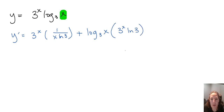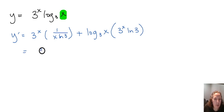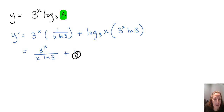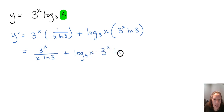With an exponential, remember, if our base is not e, we multiply by the natural log of the base in the numerator. So here we get 3 to the x over x times the natural log of 3, plus log base 3 of x times 3 to the x times the natural log of 3.